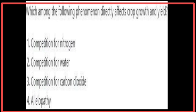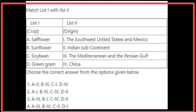Among the following phenomena, allelopathy directly affects crop growth and yield. Matching origins of oilseeds: safflower originated from the Mediterranean and Persian Gulf; sunflower from the southwest United States and Mexico; soybean from China; and green gram from the Indian subcontinent. The answer is 3, 1, 4, 2 — the third option.